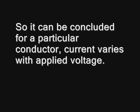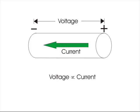So it can be concluded, for a particular conductor, current varies with applied voltage. And for metallic conductor, this variation is linear. That means, electric current through a particular conductor is directly proportional to the applied voltage across it. This is Ohm's law.